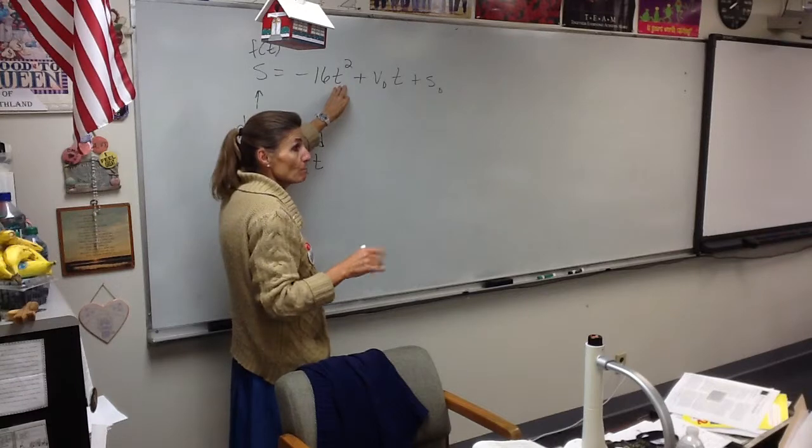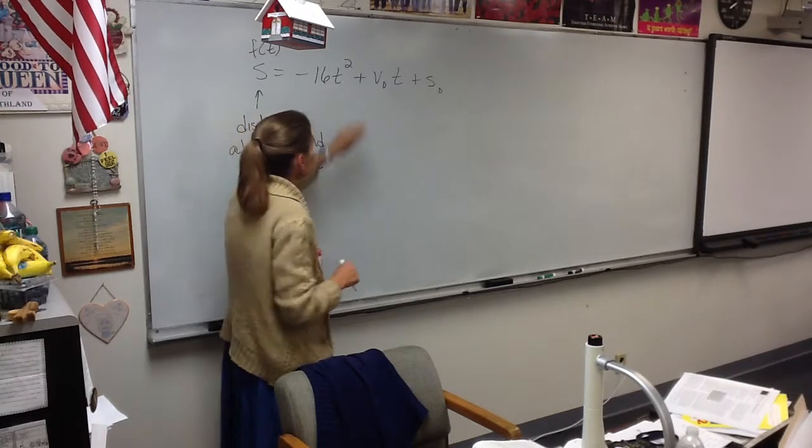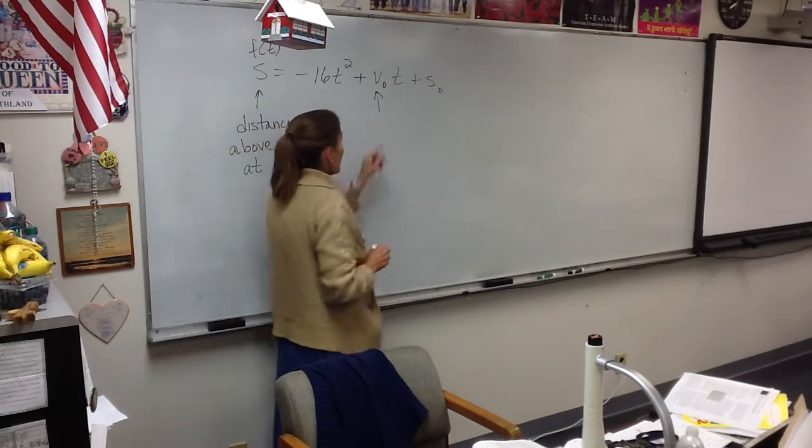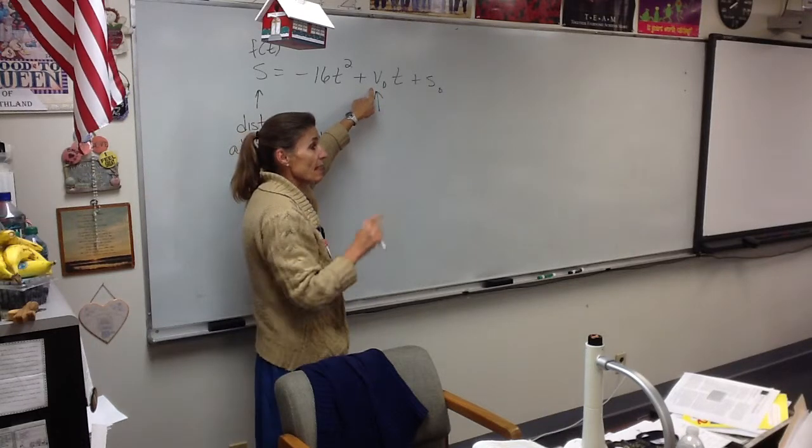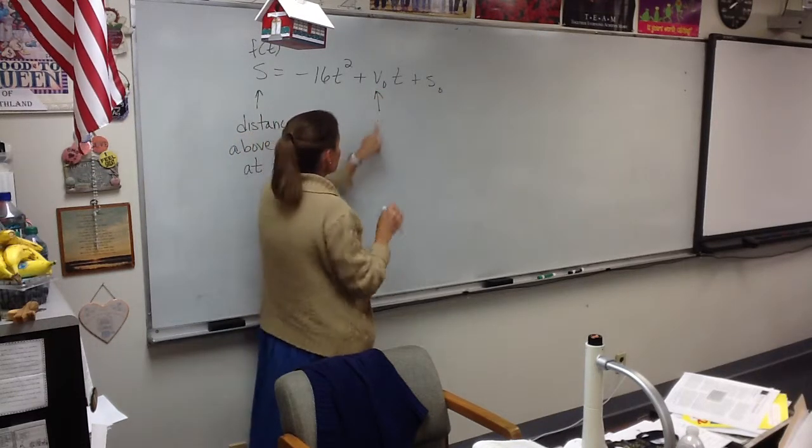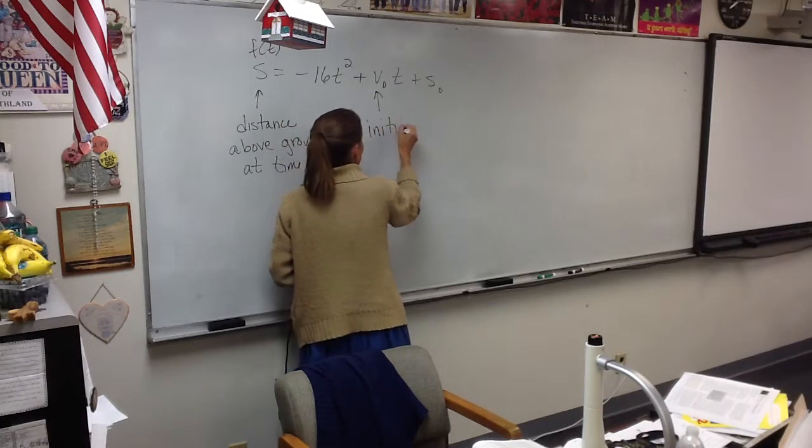T is the time, usually in seconds, but it could be something else. V sub-naught, and that's the way we read that, V sub-naught is the initial velocity.